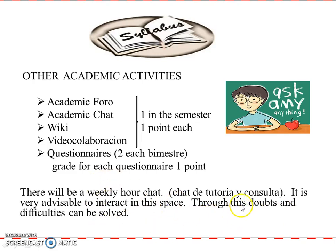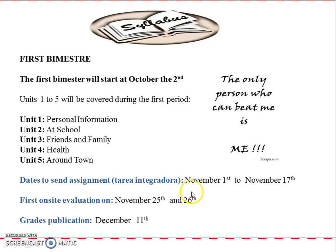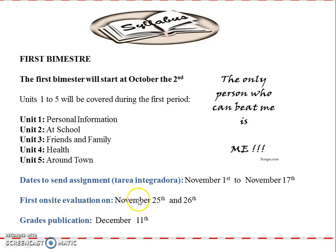Here is the first bimester description. It will start on the 2nd of October. Units 1 to 5 will be covered — Personal Information, At the School, Friends and Family, Health, and In a Long Time. The tarea integradora for the first bimester must be sent between the 1st and the 17th of November. The first on-site evaluation is on the 25th or 26th of November — check your calendar for the schedule. Grades will be published on the 11th of December.